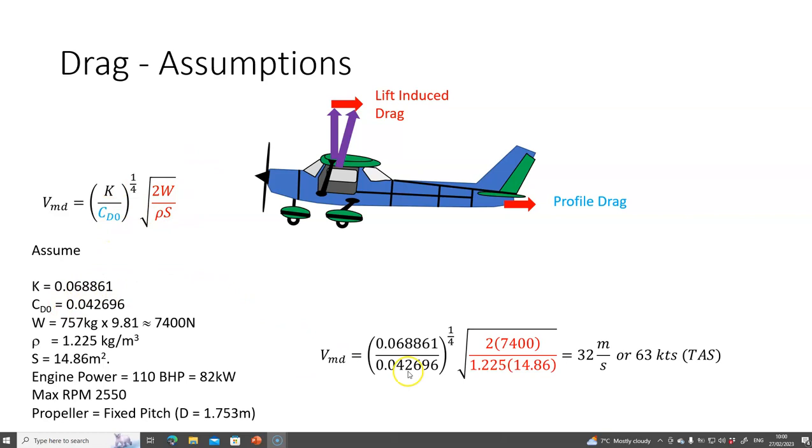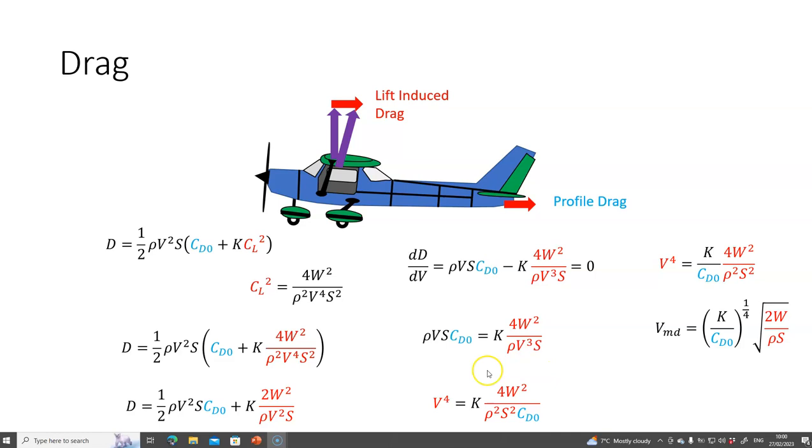If I take these values and put them into this equation, I will get a velocity of minimum drag of 32 meters per second or 63 knots. If I plot drag against velocity, varying velocity between say five meters per second and up,